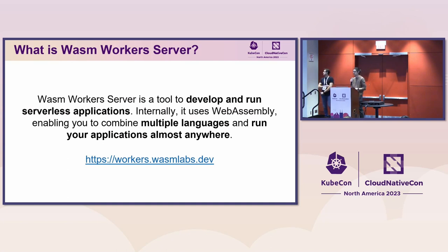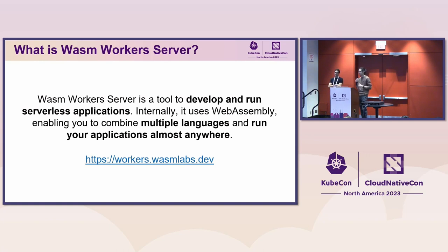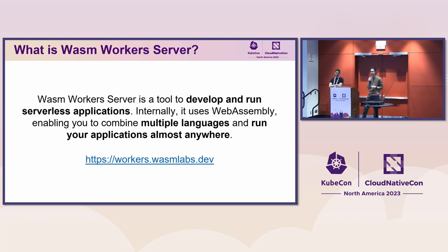Wasm Worker Server is a tool to develop and run serverless applications. Internally it uses WebAssembly and enables you to combine multiple languages into the same application — for example, run Python with JavaScript together. And then you can run the application almost anywhere, because once you compile an application targeting the WebAssembly virtual machine binary format, that same module can run in any environment that provides a runtime capable of running it — ARM64, x86, any new chip the runtime supports, without having to recompile the project.